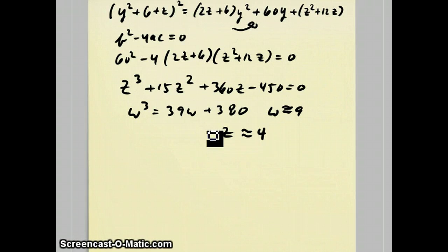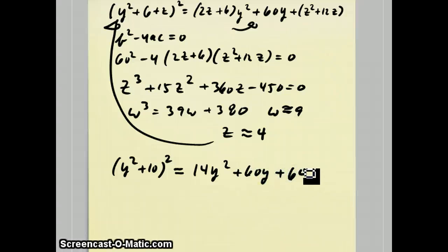So, when we plug that z back into this top equation here, we end up with (y² + 10)², I'm going to call it 4 for now, is equal to 14y² + 60y + 64. Now again, z isn't really equal to 4, so this thing on the right isn't exactly a perfect square, but for our purposes, it's close enough. So, since this is essentially a perfect square trinomial, it's going to factor into (√14y + 8)².